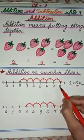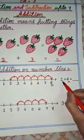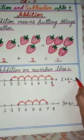What did we get here? 8. So this is our answer. We will write here 2 plus 6 equals 8.